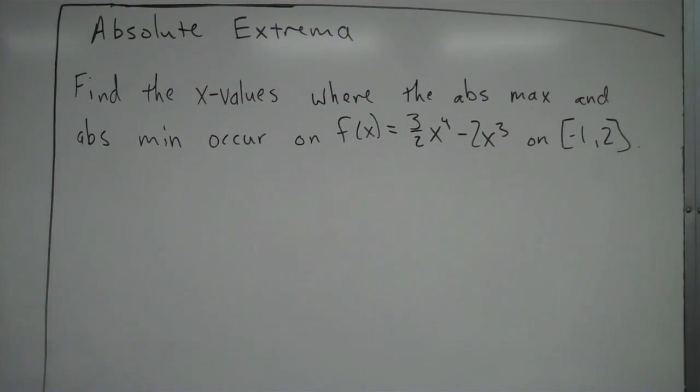Alright, so we're going to look at an example of an absolute extrema problem. Find the x values where the absolute maximum and absolute minimum occur on f(x) = (3/2)x⁴ - 2x³ on the closed interval from -1 to 2.